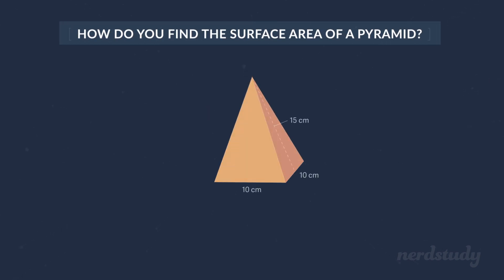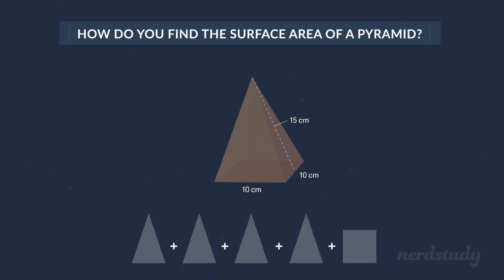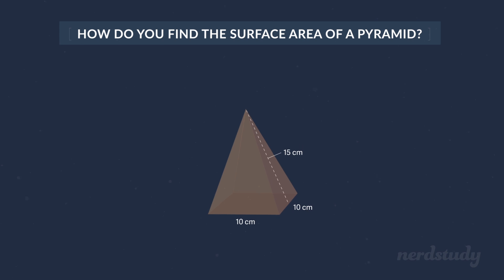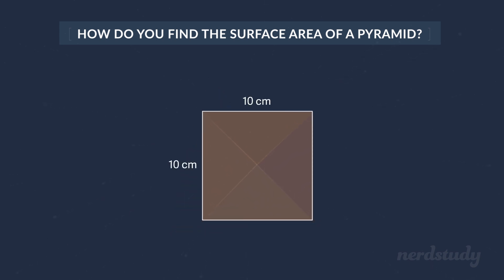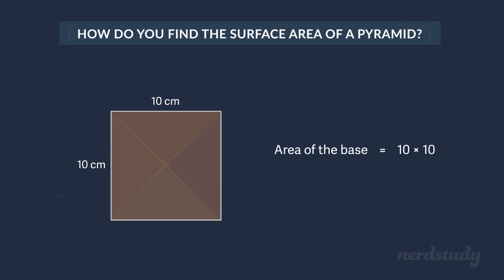So how do you find the surface area of a pyramid? All you need to do is make sure that you find the area of each side and then add it all together. However, do note that this measurement right over here represents the height of the lateral face and not the height of the pyramid itself. So since this is a square-based pyramid, one of the sides will of course be a square. We can get the area of the base by doing 10 times 10, which equals 100 centimeters squared.